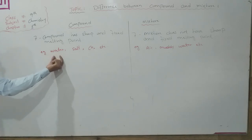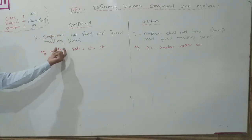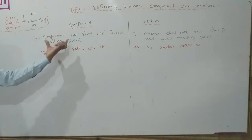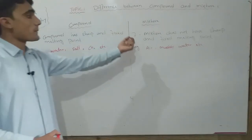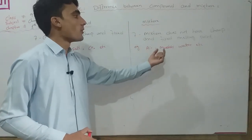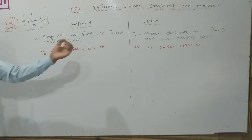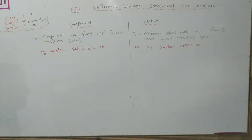Examples of compounds include water, salt, carbon dioxide, etc. Examples of mixtures include air, muddy water, etc. Air is a mixture because it contains different types of gases. Muddy water is a mixture. The salad is also a mixture because it contains different types of vegetables.